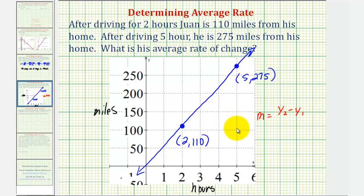which would give us the change in the distance, and then divide by x sub two minus x sub one, which would be the change in time, which would give us our average rate of change, which we found to be 55, or 55 miles per hour.